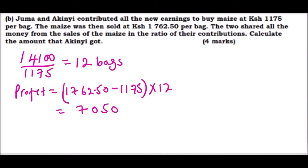Using a calculator you'll be able to get that they got 7050 shillings. Now we can get the ratio of their contribution. You'll find that Juma contributed 8400 and Akinyi contributed 5700.